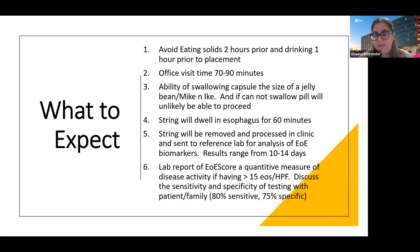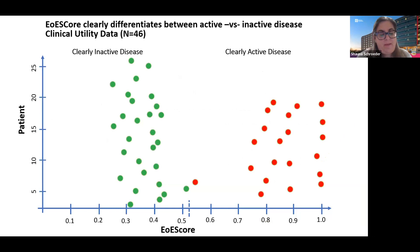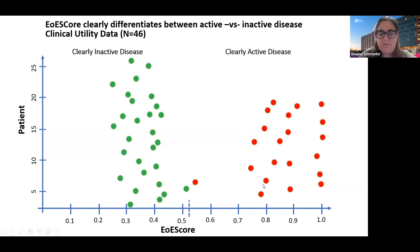This chart was provided by the Entero Tracker company. The EOE score clearly defines inactive disease — the green dot plotted patients — compared to those with active disease. The cutoff reference is at 0.530: below that indicates inactive disease, and those with higher scores have active disease. This was based on 46 patients.